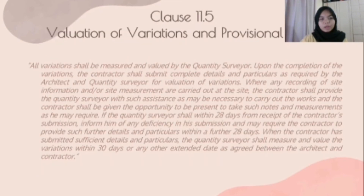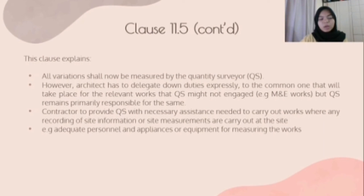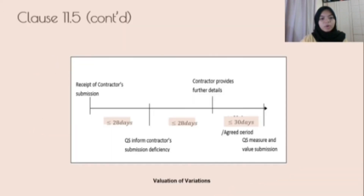Clause 11.5 - Valuation of Variation and Provisional Sum. This clause explains that all variations should now be measured by the QS. However, the architect has to delegate duties expressly to another party that will take place for relevant works that the QS might not be engaged in, such as M&E works, but the QS remains primarily responsible. The contractor must provide the QS with necessary assistance needed to carry out work, including recording of site information or site measurement, such as adequate personnel and equipment for measuring the works. Here is the timeline for valuation of variation.